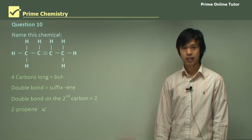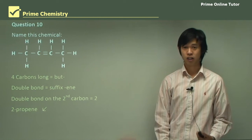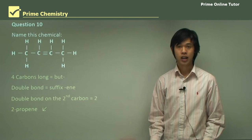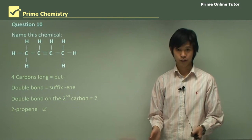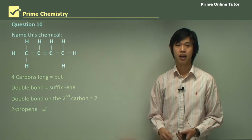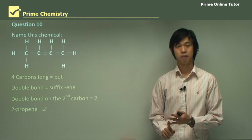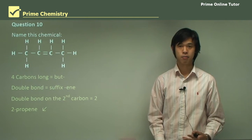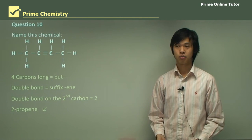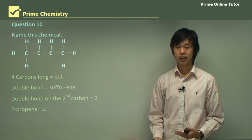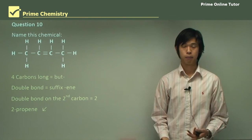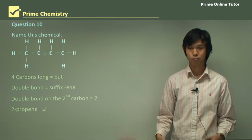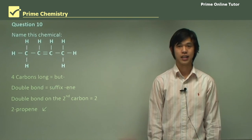That wraps up today's lesson on nomenclature of hydrocarbons. We learned what the different hydrocarbons are and how we name them, and we concentrated mainly on aliphatic hydrocarbons and their three types: alkane, alkene, and alkyne. Hopefully you've learned how to name them correctly when you see them. The next lesson will be on naming more complex hydrocarbons, and I look forward to seeing you then.